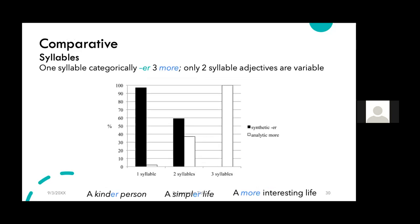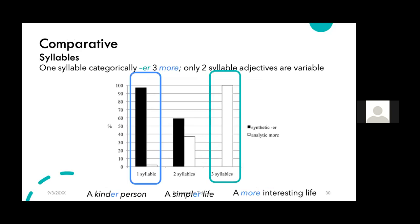In comparatives, one-syllable adjectives get '-er' nearly all of the time, and three-syllable adjectives get analytic 'more' nearly all the time — like 'more interesting life.' Of the 52 two-syllable adjectives in the data, only a small set actually alternate — and that is where the variation is.